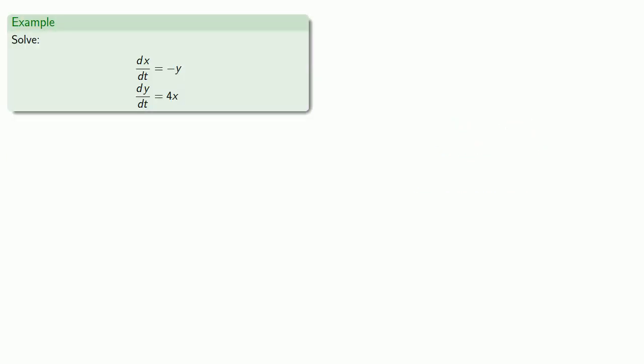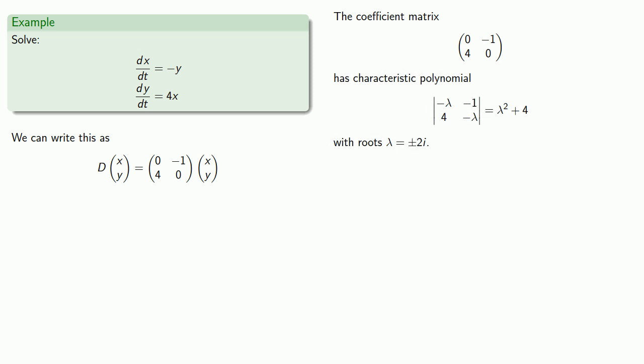So, for example, suppose I have this linear system. We can rewrite this in operator form. The coefficient matrix will have characteristic polynomial, and so we'll have eigenvalues plus or minus 2i.